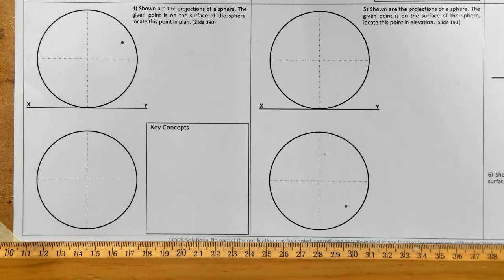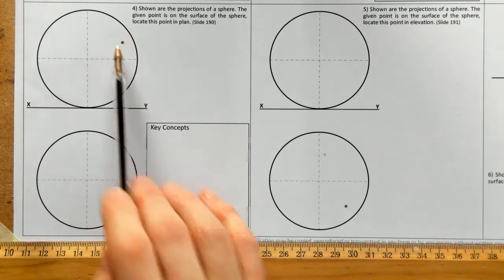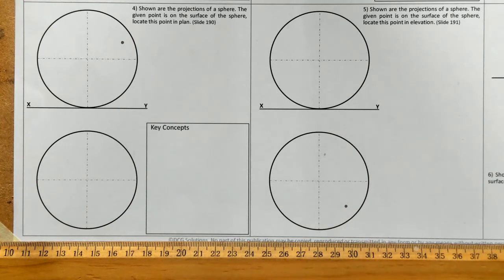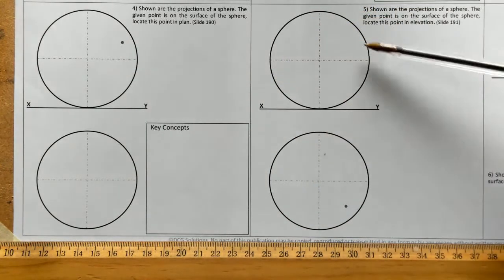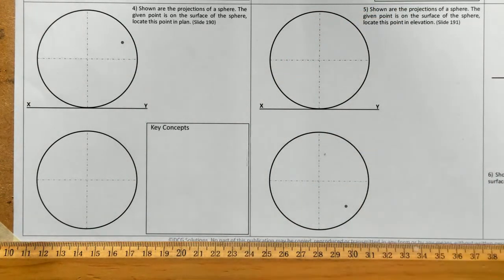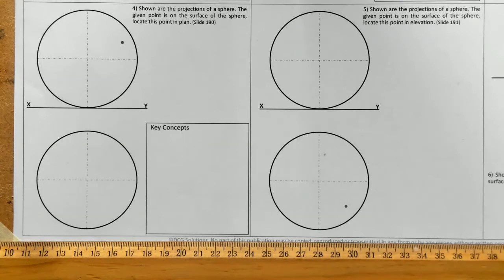We have two sphere problems in front of us. One has a point in elevation, the other has a point in plan. We have to locate where that point is in the plan view for the first one, and in the elevation view for the second. For a sphere, we cannot run straight lines because a sphere is a curved surface, so we're going to use the horizontal cuts method — applying the same principle we just used on the cone.